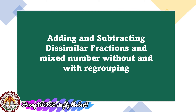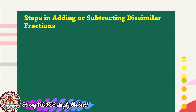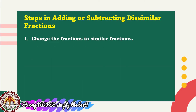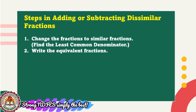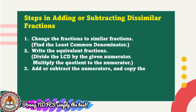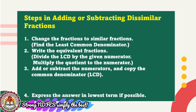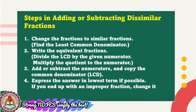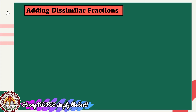Now let us study how to add and subtract dissimilar fractions. Here are the steps: Number 1, change the fractions to similar fractions by finding the least common denominator or LCD. Number 2, write the equivalent fractions by dividing the LCD by the given denominator. Number 3, multiply the quotient to the numerator, then add or subtract the numerators and copy the LCD. Number 4, express the answer in lowest term; if you end up with an improper fraction, change it to a mixed number.